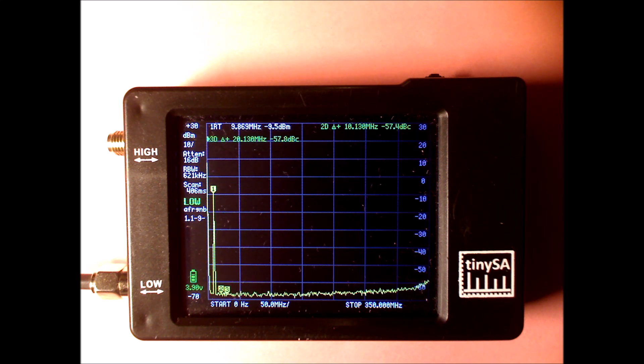So we're going to increase the input level further. And we're now at 0 dBm. So we have a 0 dBm signal into the TinySA. Everything is in default settings.